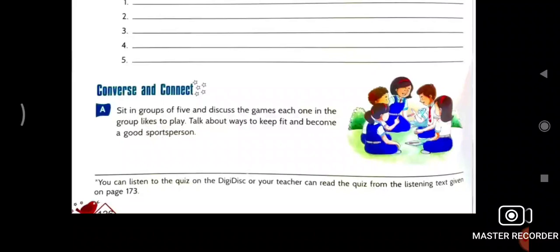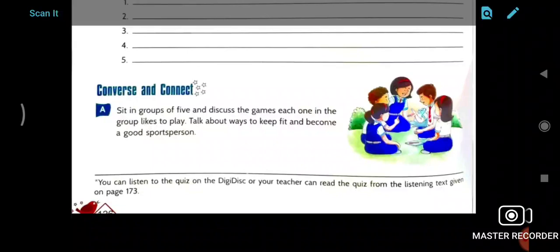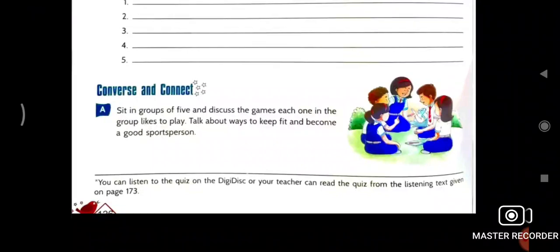And here, converse and connect. There are five children are there. Here in the figure. And sit in the groups of five and discuss the games each one in the groups like to play. Let's talk about, about ways to keep fit and become a good sport person. Here actually, you have to, actually you are at home, so discuss with your brother, elder brother, elder sisters, or younger. What about the benefit of, benefit of how to keep fit and which game do you like most. That you have to discuss here.